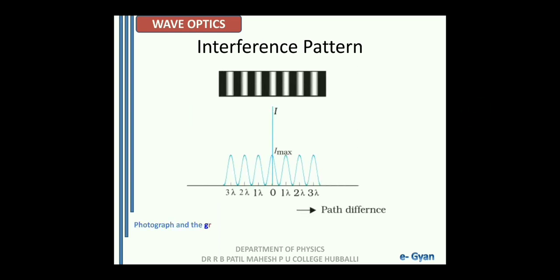Here we have a photograph and a graph of the intensity distribution in Young's double slit experiment — path difference versus intensity. At zero path difference, at the center, we have a bright fringe. Between 0 and 1 lambda, at lambda/2, we have a dark fringe. At 1 lambda on either side we have bright fringes; at 1.5 lambda dark; at 2 lambda bright; at 2.5 lambda dark; at 3 lambda bright, and so on. The maximum intensity of all bright fringes is the same — all brights are equally bright and all darks are equally dark.